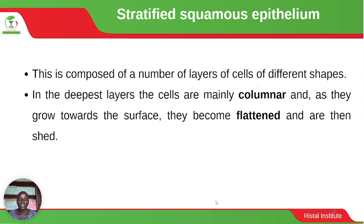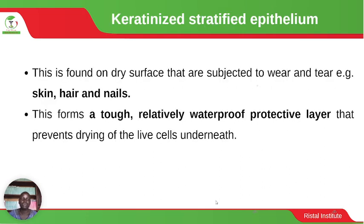The stratified squamous epithelium is composed of a number of layers of cells of different shapes. In the deepest layers the cells are mainly columnar, and as they grow towards the surface they become flattened and then shed. The keratinized stratified epithelium is found on dry surfaces subjected to wear and tear, such as on the hair, skin and nails.